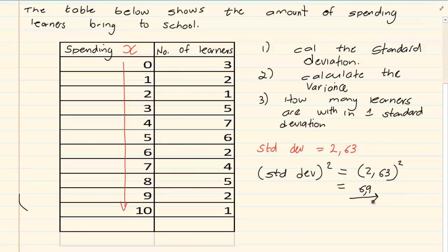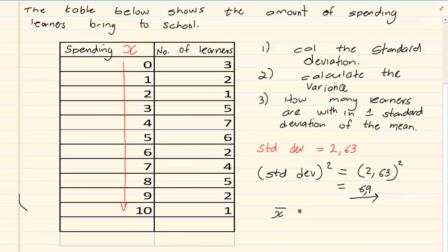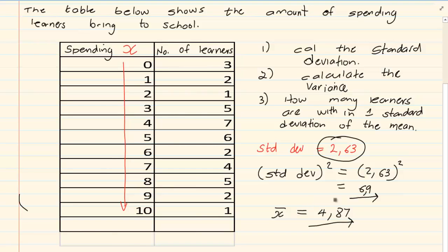They will ask how many learners are within one standard deviation of the mean. Standard deviation always works with the mean. You already have the information on your calculator. All you have to do is press Shift 1, go to number 4 which is variance, then press number 2 which will give you the mean. X-bar refers to the mean, which means the mean is equal to 4.87.